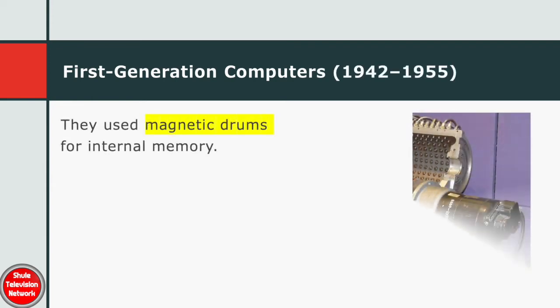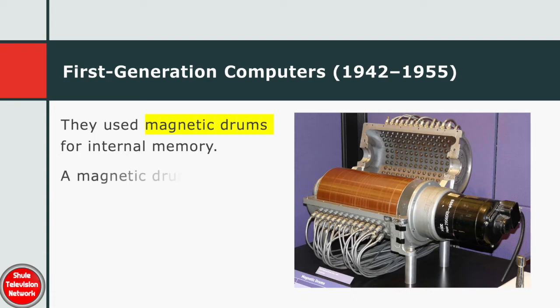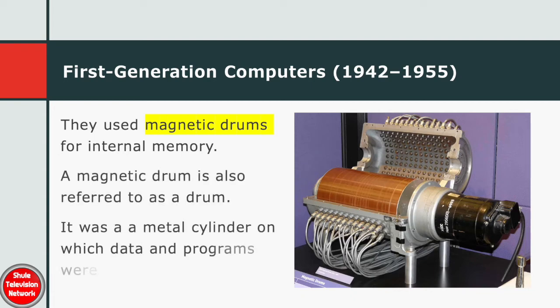First generation computers used magnetic drums for internal memory. A magnetic drum is also referred to as a drum. It was a metal cylinder on which data and programs were stored.